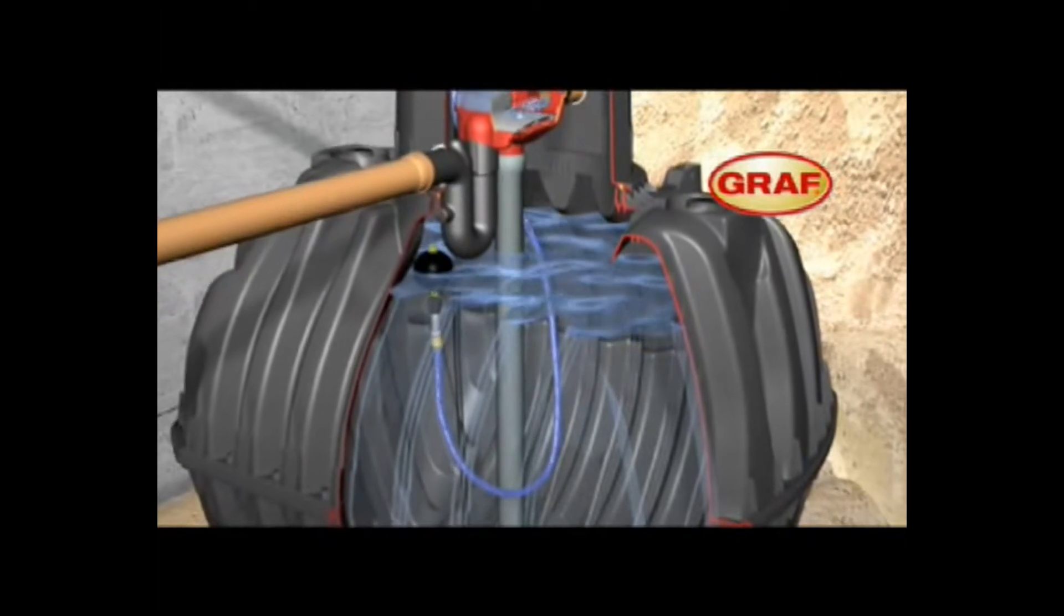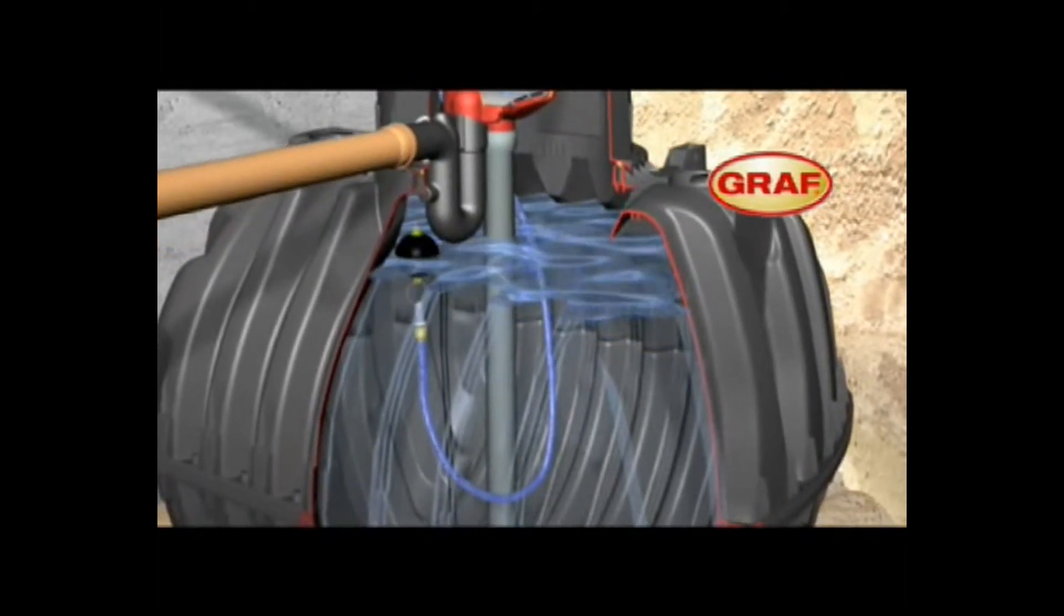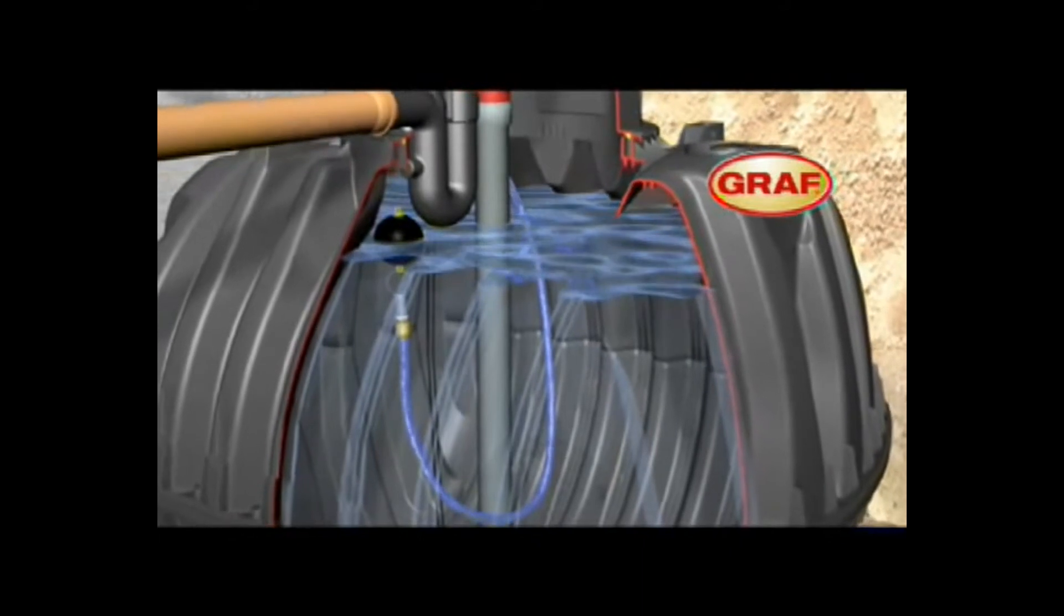A floating suction hose draws the harvested water from just below the surface, where it is at its cleanest.